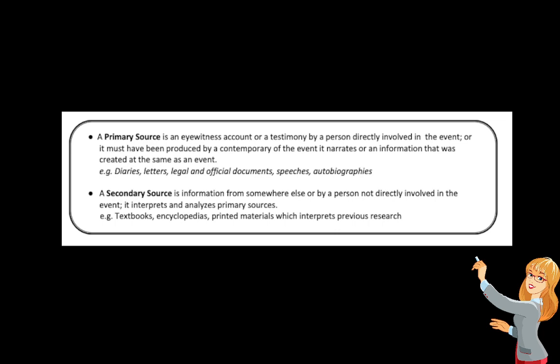In the previous vlog, we distinguished primary sources from secondary sources. A primary source is basically an eyewitness account or objects produced during the event we are studying. A secondary source is mainly an interpretation based from the primary sources by someone who would like to assess, evaluate, and interpret those primary sources.